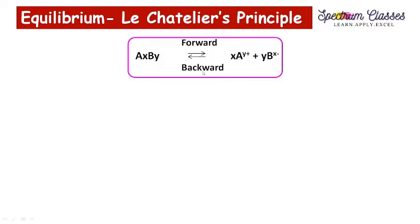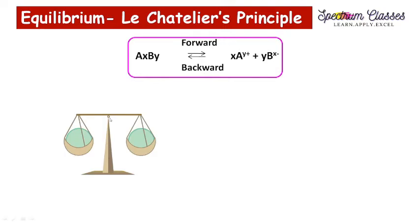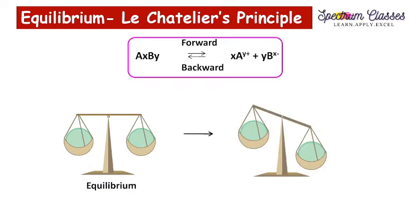When this undissociated salt dissociates, that is known as the forward reaction. If the dissociated ions combine together again to form the salt, that reaction is called the backward reaction. This can be understood with the picture of a balance. This represents the equilibrium situation. If the material in one pan is less and the other pan has more, the pan with less goes up and the pan with more goes down.